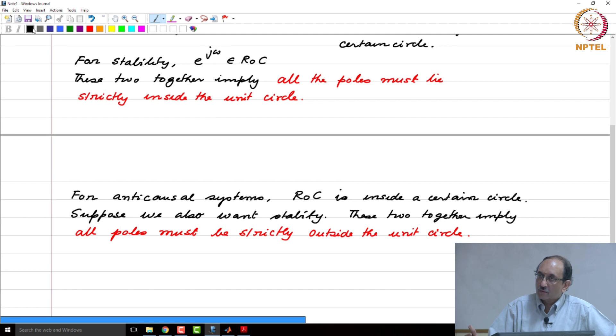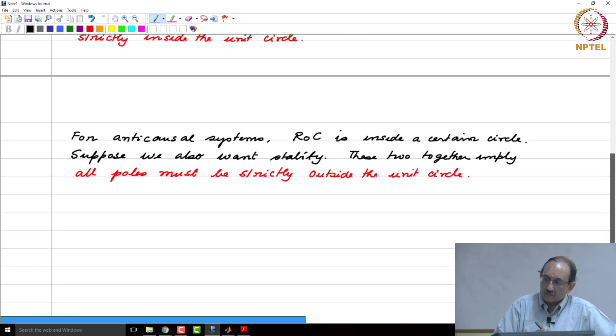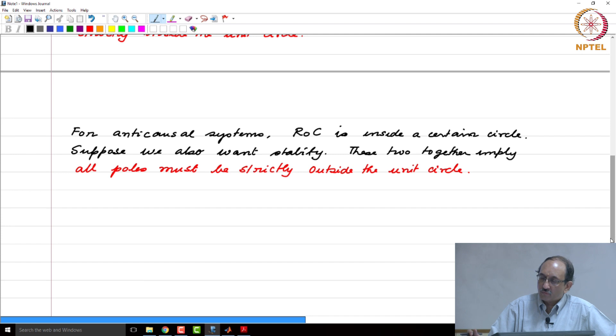Therefore, when you say for stability poles must lie in the left half plane in general, what you are also assuming is causality. Similarly, here in the discrete time case, typically we say that for stable systems, you need all the poles to lie inside the unit circle. Underlying assumption is causality.